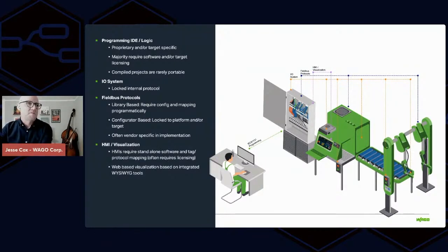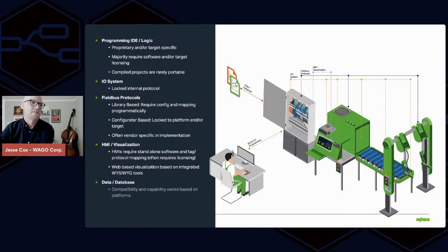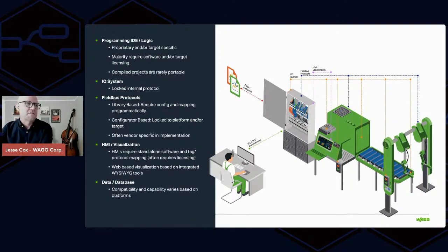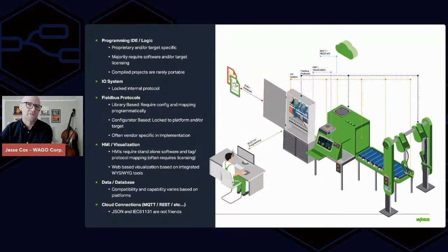There's typically an HMI involved, or some sort of visualization. There's a bring-your-own-device trend where things are deployed on phones or tablets, requiring HTML5 or web-based HMI. When those come from a runtime IDE, they follow a WYSIWYG development path which limits scalability compared to a modern web framework. There's also a data and database component almost always in control systems now, and more and more we see connected clouds — and this is where things get tricky, because JSON and IEC 61131 are not friends.